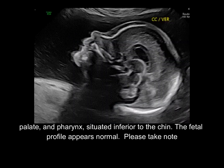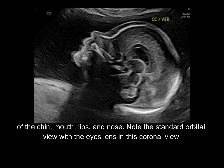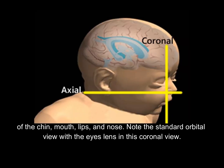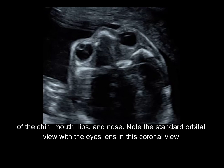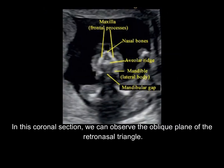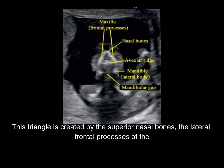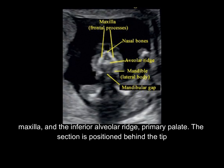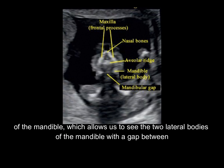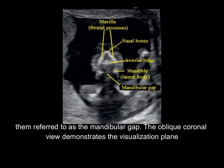The fetal profile appears normal. Please take note of the chin, mouth, lips, and nose. Note the standard orbital view with the eyes and lens in this coronal view. In this coronal section, we can observe the oblique plane of the retronasal triangle. This triangle is created by the superior nasal bones, the lateral frontal processes of the maxilla, and the inferior alveolar ridge or primary palate. The section is positioned behind the tip of the mandible, which allows us to see the two lateral bodies of the mandible with a gap between them, referred to as the mandibular gap.